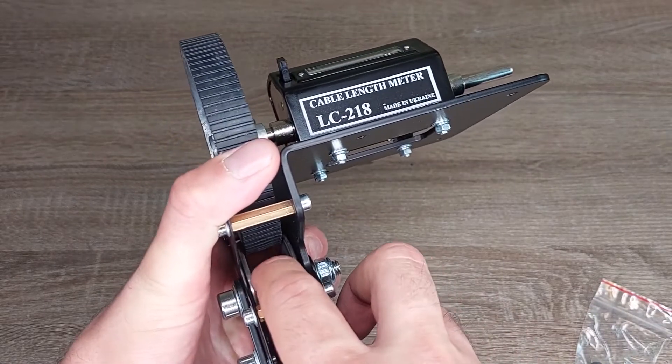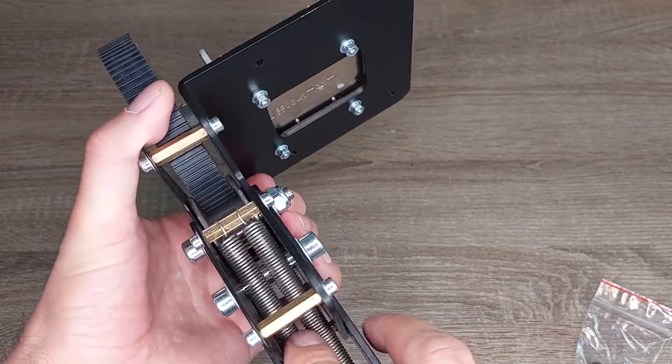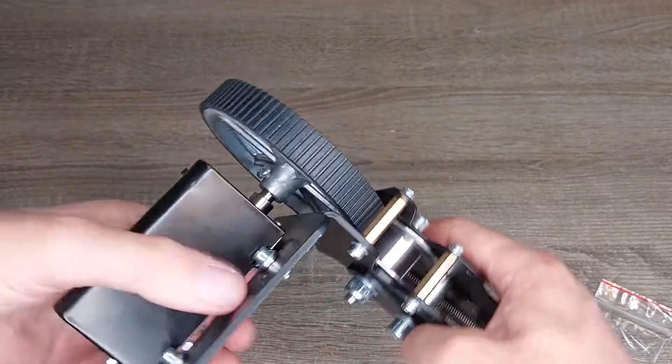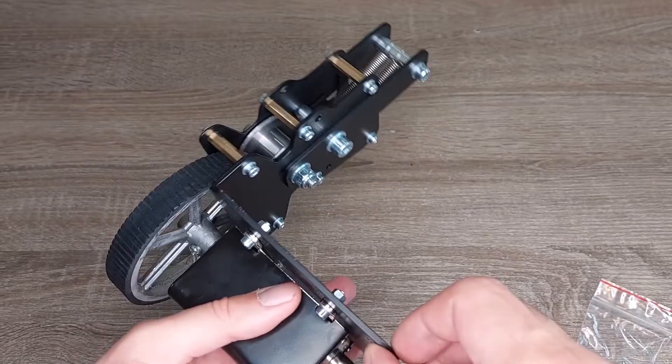Here is the pressure roller, two springs. This is the steel, three millimeters.